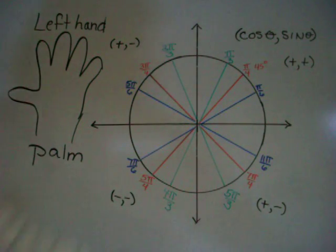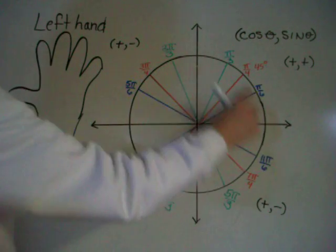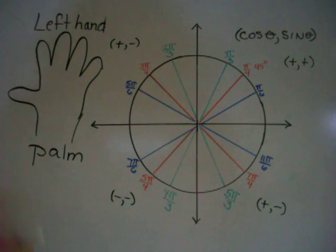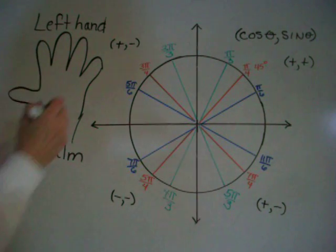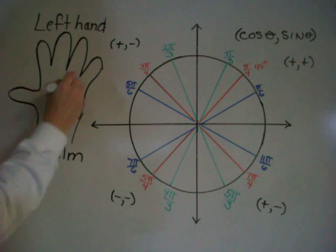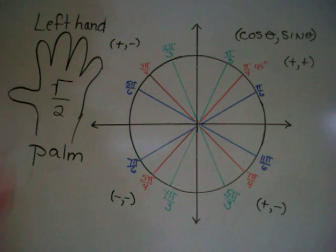To do this trick, we can find the sine and cosine of any angle on the circle chart. What you need to do is start by writing on your palm, your left-hand palm, the square root of divided by 2. All your answers are going to be the square root of something divided by 2.